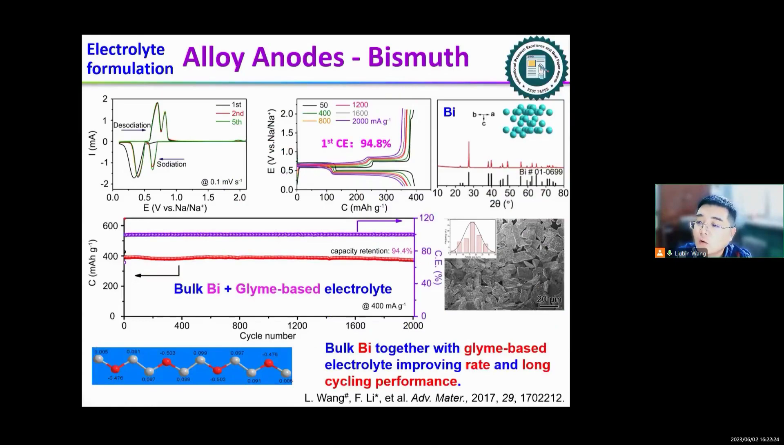As we all know, when we use nanostructure or carbon composite electrode, the coulombic efficiency in the first cycle is quite low, which may consume amount of electrolyte and influence the subsequent cycling. In this paper, we optimized the electrolyte when we used a commercial bulk bismuth with glyme-based electrolyte, which the bulk bismuth particle size is around 20 micrometers, which shows an excellent long cycling performance.